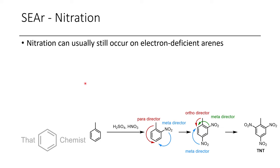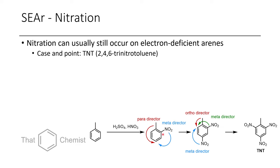Nitration can occur even on fully deactivated arenes — a case in point is the synthesis of TNT. Starting from toluene, the methyl group is an ortho-para director, so the first nitro can add ortho or para. Now with an electron-withdrawing nitro group present, further addition is directed to the meta position, while the methyl group directs ortho-para. Once the second nitro group is added, both nitros and the methyl group all direct to the same position, which is why TNT can be made.